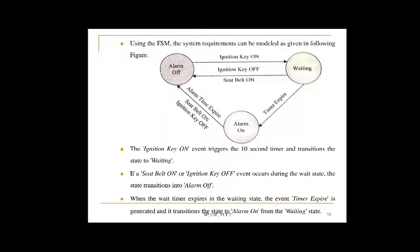The FSM for the seat belt warning system has three states: Alarm Off, Waiting, and Alarm On. Five events are possible: ignition key on, ignition key off, timer expire, alarm time expire, and seat belt on.